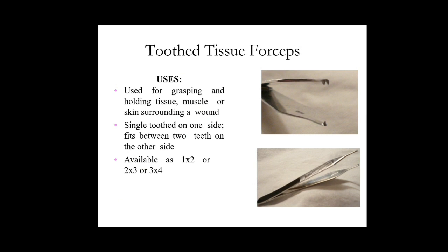The next one is tooth tissue forceps. It is used for grasping and holding tissue, muscles, and skin surrounding a wound. This tooth forceps comes in different sizes — one by one, one by two, two by three, or three by four — meaning one head has one, two, or three teeth and the other has two, three, or four teeth. They are mainly used for holding or grasping tissues, sometimes hard or fibrous tissues that you need to hold during any surgical procedure.